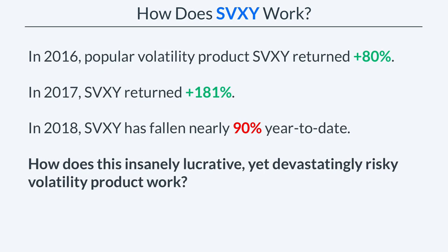In 2016, popular inverse volatility product SVXY returned 80%. The next year, in 2017, SVXY returned over 180%. And in 2018, SVXY is currently down about 90% year-to-date. So how exactly does this insanely lucrative, yet very risky volatility product work?